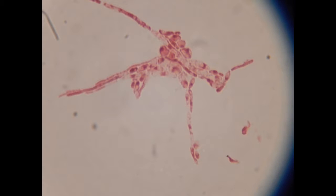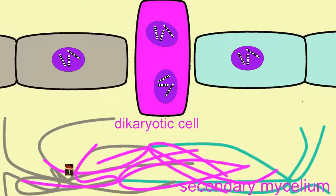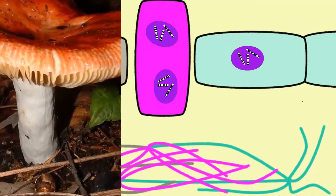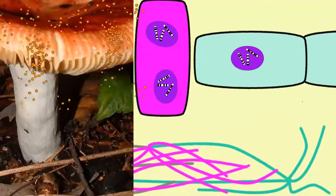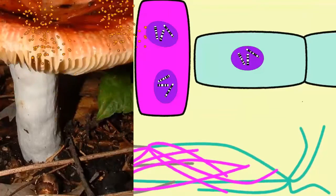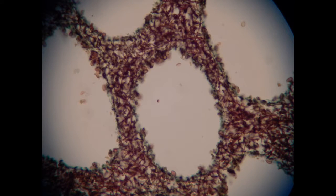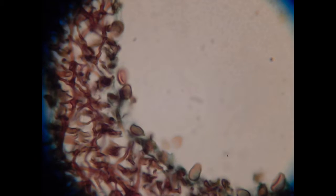The Basidiocarp, or mushroom, is composed of cells in the dikaryon state, where they have two separate nuclei per cell, which do not fuse. Within the Basidiocarp, nuclei fuse to form diploid cells, which then undergo meiosis, producing haploid Basidiospores.